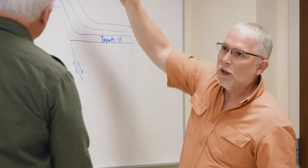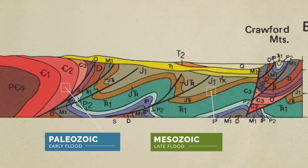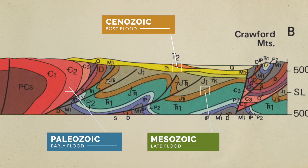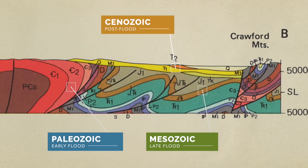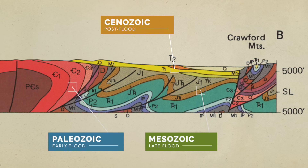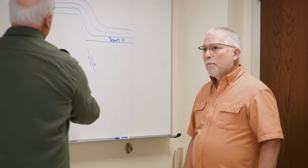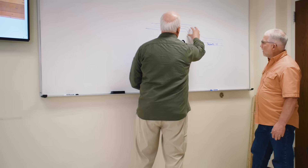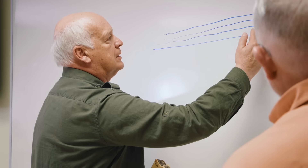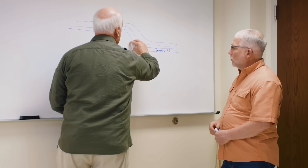These rocks are folded and bent all the way up through the Paleozoic, which we think are flood rocks, and the Mesozoic, which we also think are flood rocks. The rocks above the Mesozoic are nice and flat and largely aren't affected by this folding process. We think that's an indication that the flood is over and those were deposited after. So if these upper layers had been hard and brittle like the lower ones, we would see a continuation of the fault line and these layers would simply drop down.